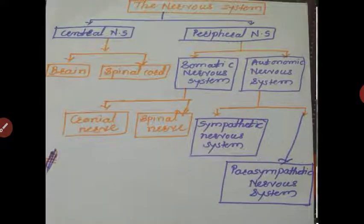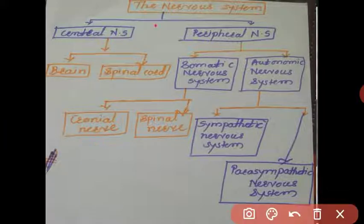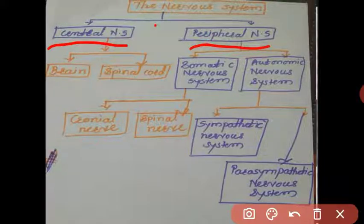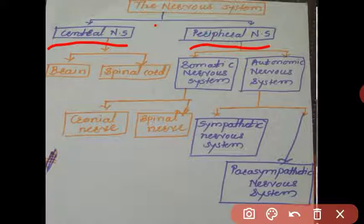First of all, I will explain the two main major divisions of the nervous system. The nervous system is divided into two parts: the central nervous system and the peripheral nervous system. The central nervous system is located in the center of the body — our brain and spinal cord are in the axis of the body. The peripheral nervous system is outside this axis.